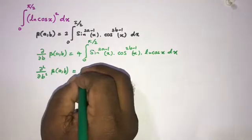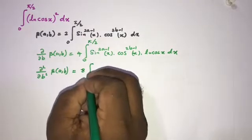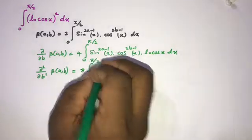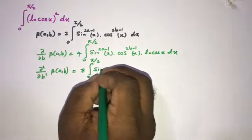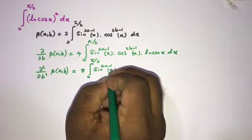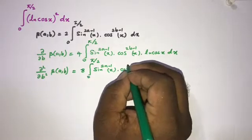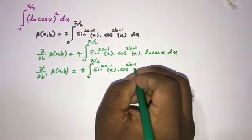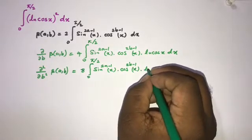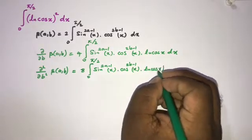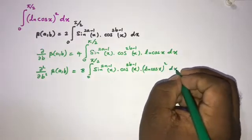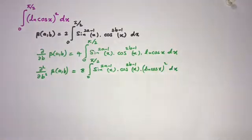If we take the partial derivative again, we can write: ∂²B(a,b)/∂b² = 8 times the integral from 0 to π/2 of sin^(2a−1)(x) · cos^(2b−1)(x) · ln²(cos x) dx.